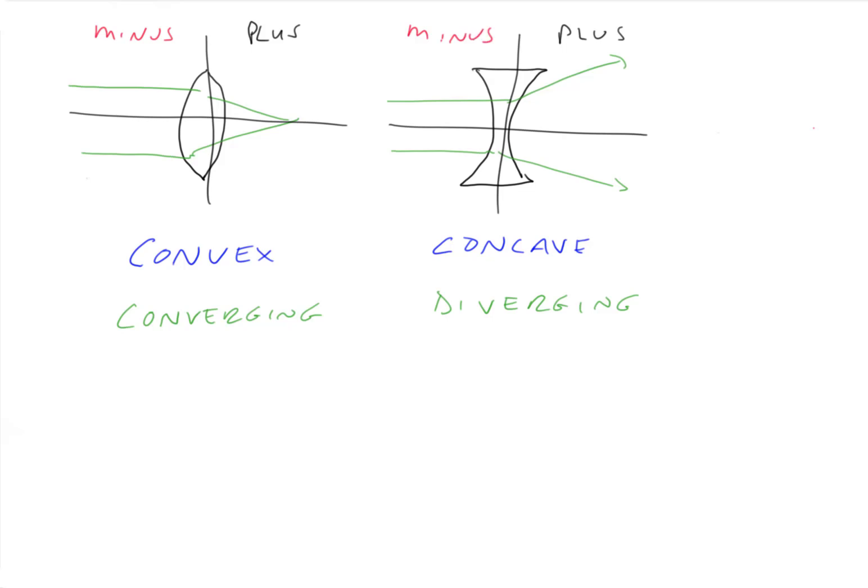So what we find is this lens on the left, parallel light that originates in minus space that goes through the lens gets focused onto the plus side of the lens. So this lens we call a plus lens.